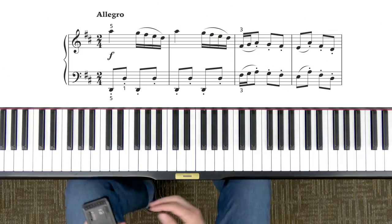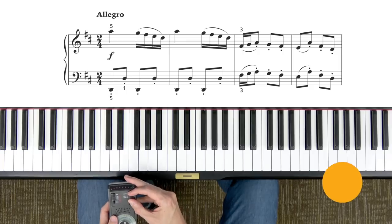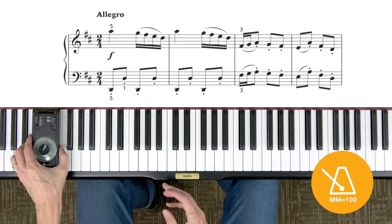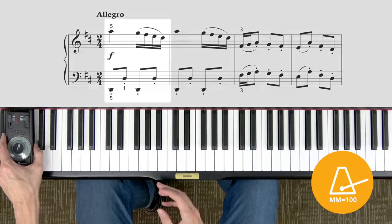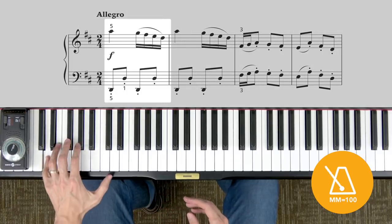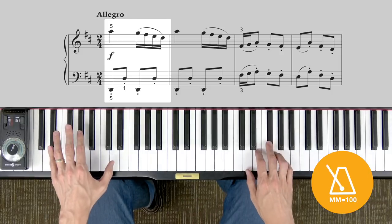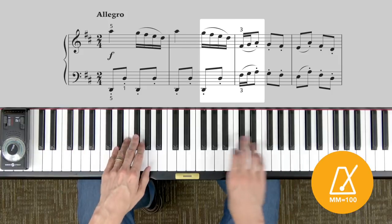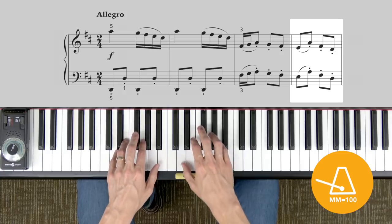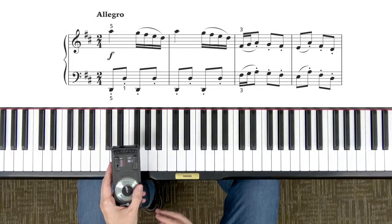When you feel like you're starting to get the hang of it, it would be a good idea to add in some metronome. I recommend at first having the metronome represent the eighth note, not the quarter note. So this would be one and two and. That's at about a hundred. You might start even slower, like at around 84 or 88.